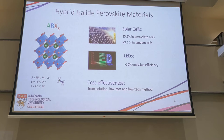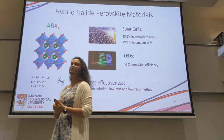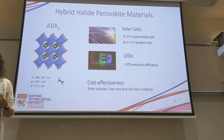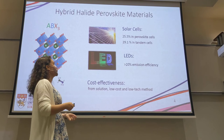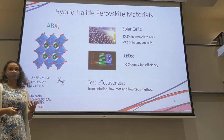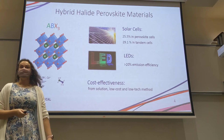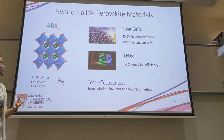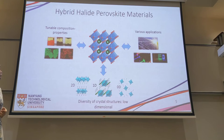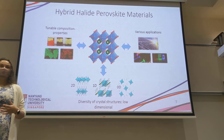These materials became important in the last ten years because in 2009 people found they can be very good absorbers for solar cells. Since then, in about ten years, efficiency increased up to 25.5% in single junction solar cells and up to almost 30% in tandem solar cells with silicon. Besides solar cells, they can be applied in LEDs — the emission efficiency of perovskite has reached over 20%. Another advantage is these materials are really cheap and easy to produce directly from solution, unlike silicon. They can also be applied in spintronics, sensing, X-ray detection, and so on.